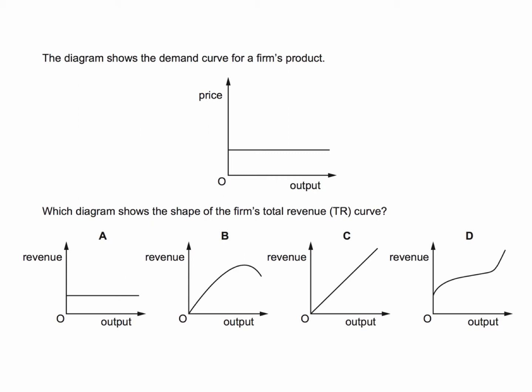Okay, so here we have an important question about the relationship between average revenue of a firm and total revenue of a firm. The firm's demand curve is also known as the average revenue curve, and the correct answer to this question is C.